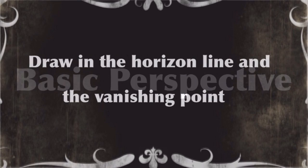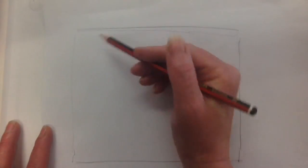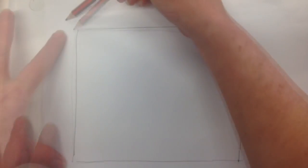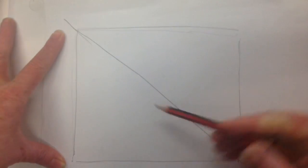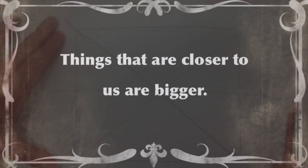So this video is on basic perspective. We draw the horizon line and the vanishing point first. We put our vanishing point right in the middle and here is our horizon line.